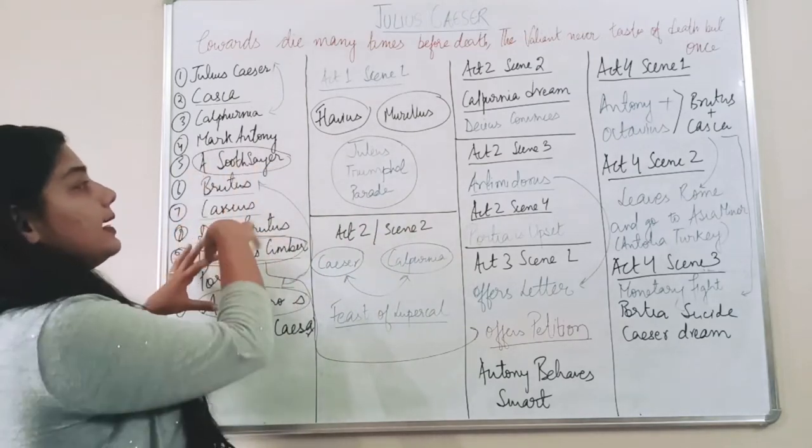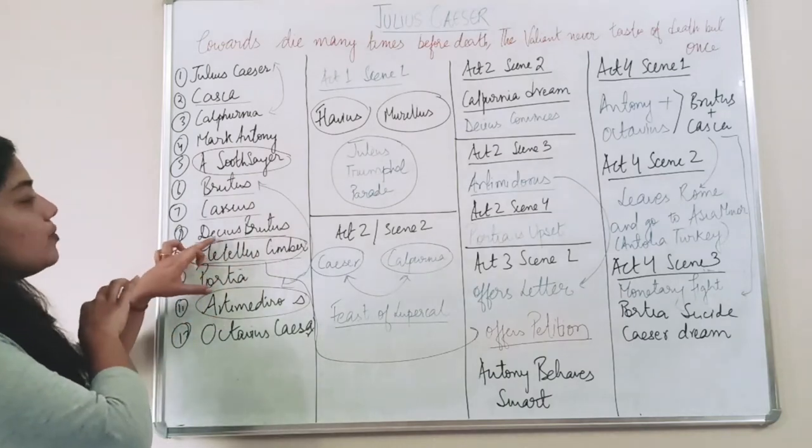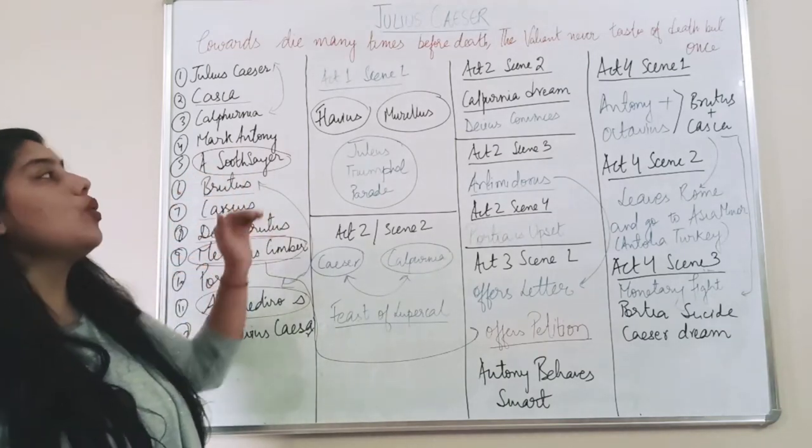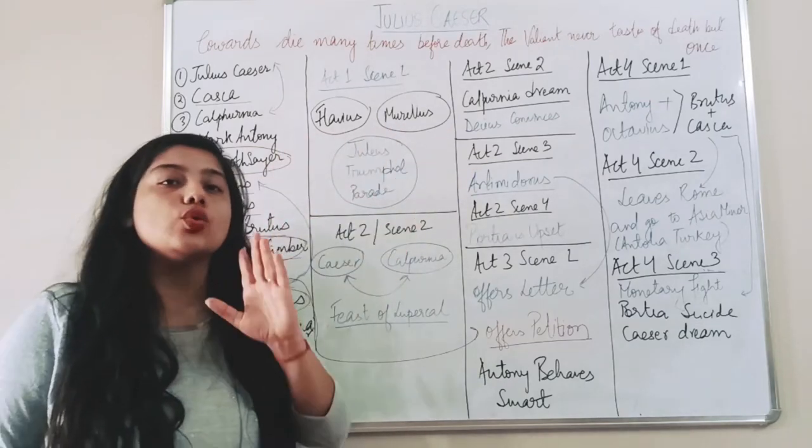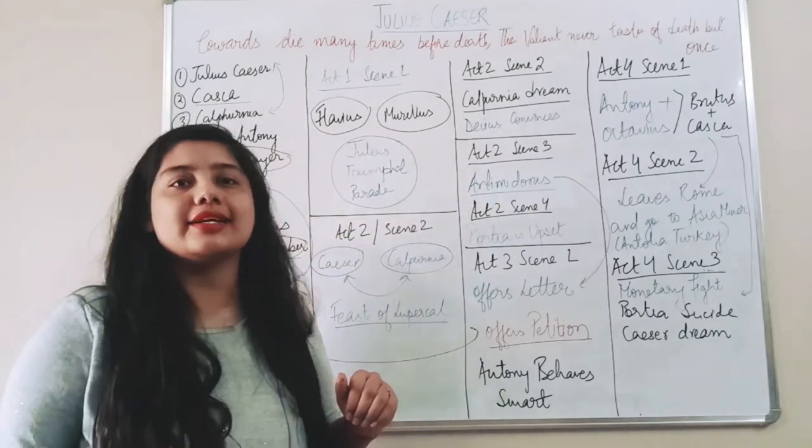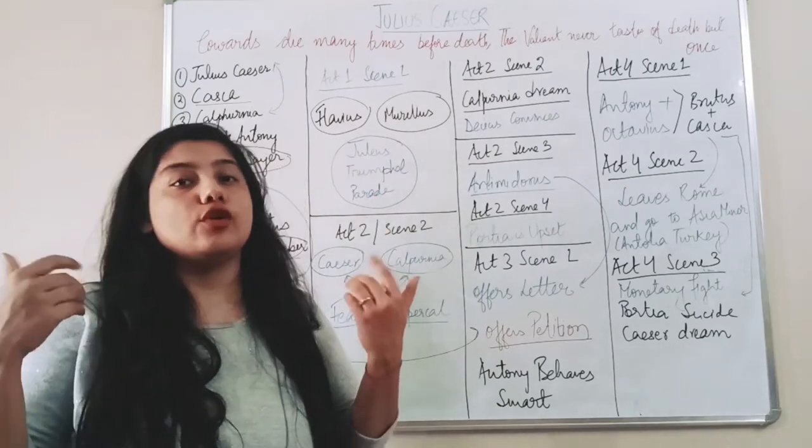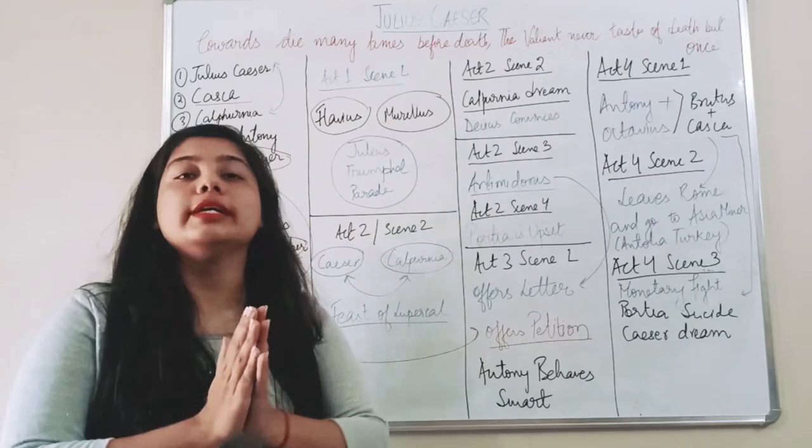So they start planning and plotting. So Decius Brutus, they all decide that Decius Brutus will go and tell Caesar that 'we are going to offer you crown in the senate, so you come to the senate, we will offer you crown and from that day you will be our king.'